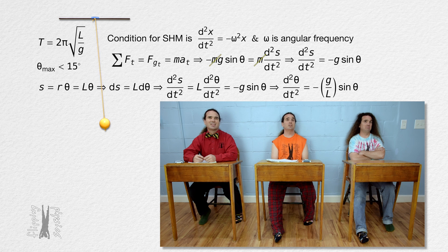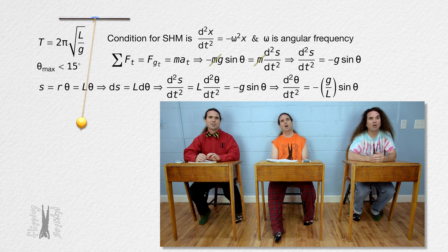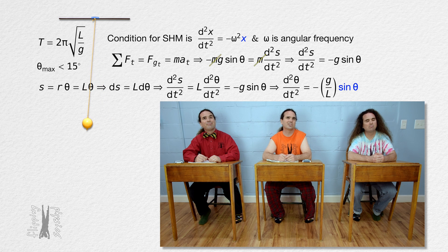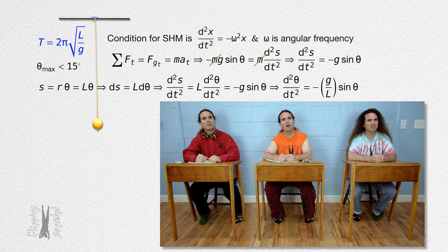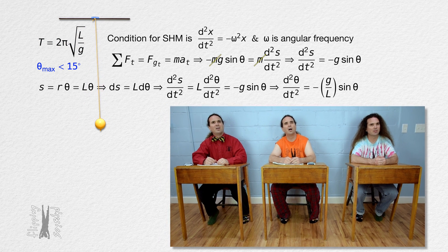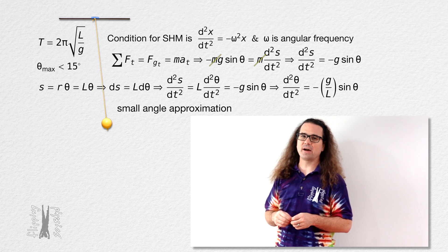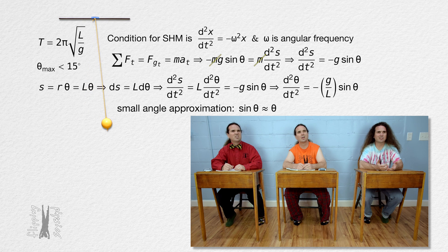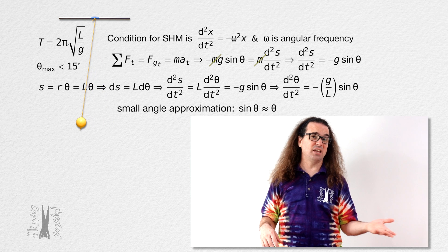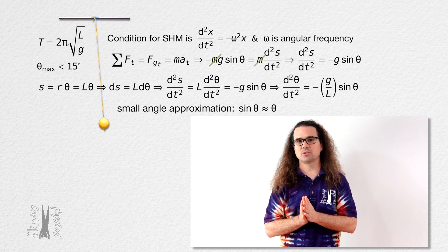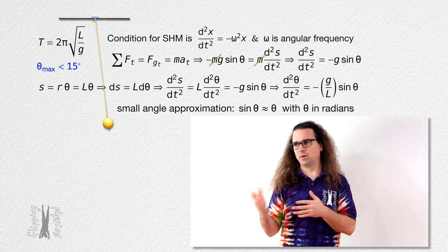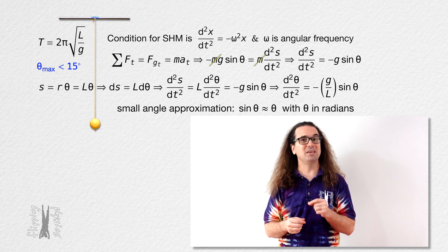We are so close to the simple harmonic motion equation, only we have sine theta instead of theta. We just need theta instead of sine theta on the right hand side of the equation. I feel like this is where we use the fact that the simple pendulum period equation is only valid for pendulum angles less than 15 degrees. That is correct. This is where we use the small angle approximation. The small angle approximation states that sine of theta and theta are approximately equal to one another for small angles. The small angle approximation is only valid when the angle is in radians.